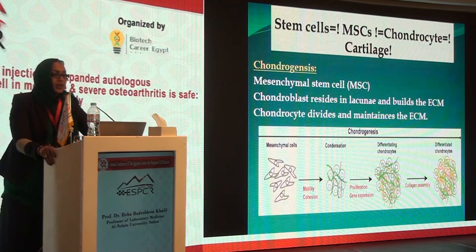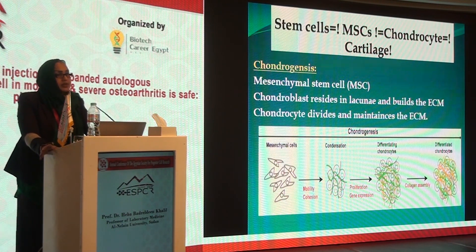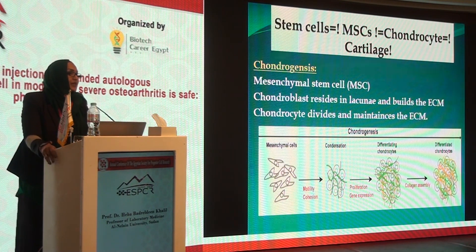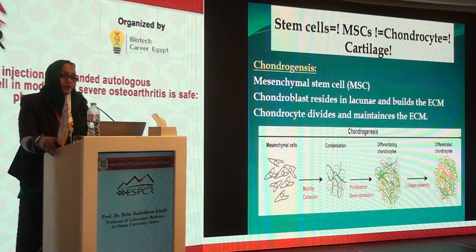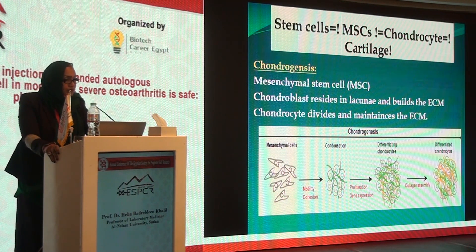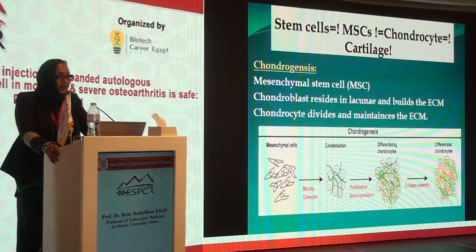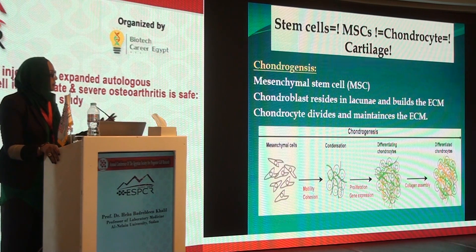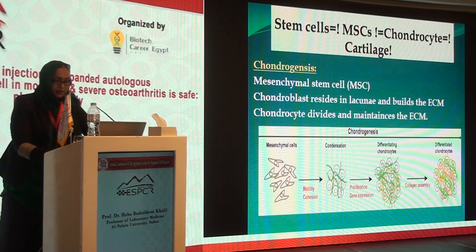Stem cells — specifically mesenchymal stem cells, also referred to as Caplan stem cells — can differentiate into chondrocytes, meaning they can produce cartilage. In chondrogenesis, mesenchymal stem cells become chondroblasts that reside in lacunae and build the extracellular matrix, and chondrocytes divide and maintain the extracellular matrix.